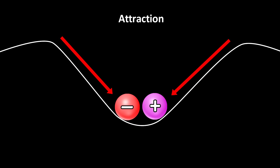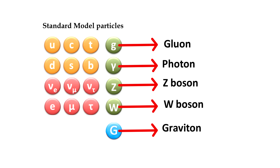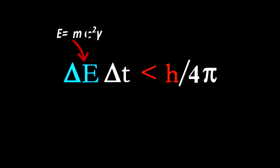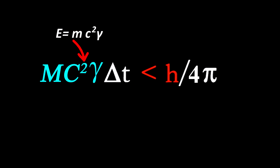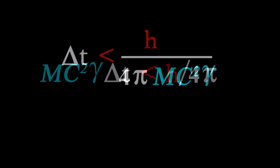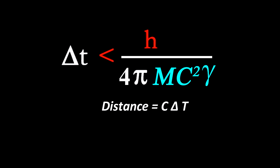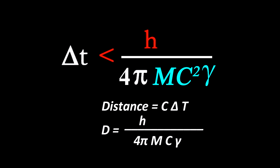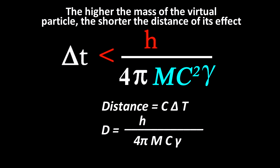Why does electromagnetism have an infinite range? This is directly due to the fact that photons have zero mass. If we take the same uncertainty equation and substitute mc² gamma instead of E from Einstein's famous equation E=mc² gamma, and since distance is c times time, you find that the higher the mass of the particle, the shorter the distance it can travel. Range is limited by its mass. Since photons have no rest mass, they can theoretically travel an infinite distance before being absorbed by another charged particle.